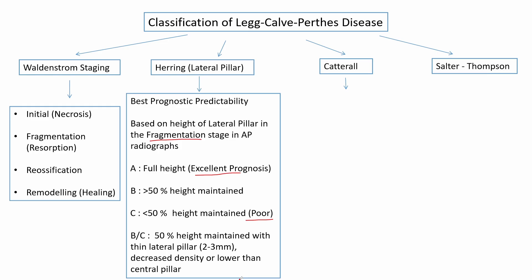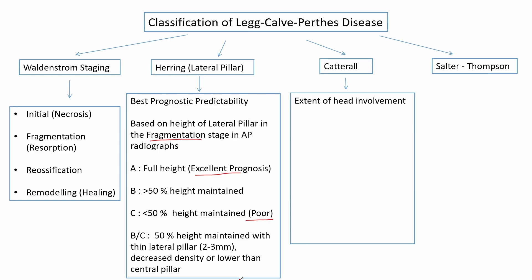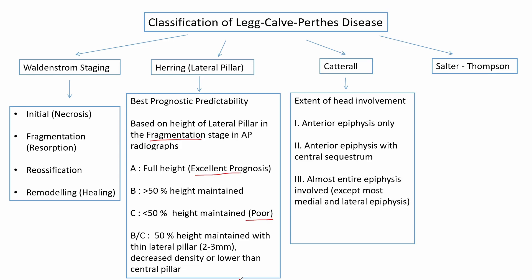The Catterall classification of Perthes disease is based on the extent of head involvement and has the following grades. In grade 1, the anterior epiphysis is only involved. In grade 2, along with the anterior epiphysis, there is a central sequestrum. In grade 3, almost the entire epiphysis is involved except the most medial and lateral portions. In grade 4, the entire epiphysis is involved.